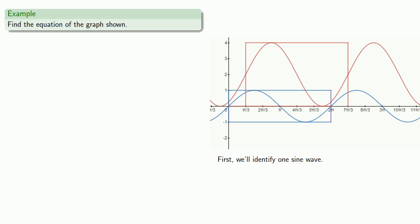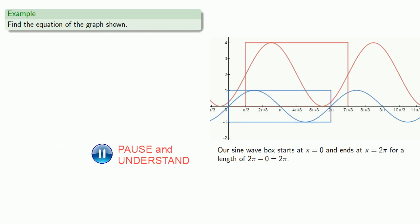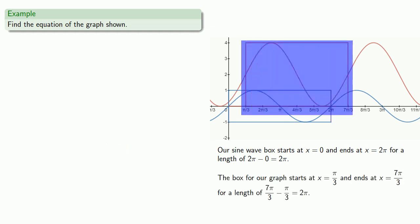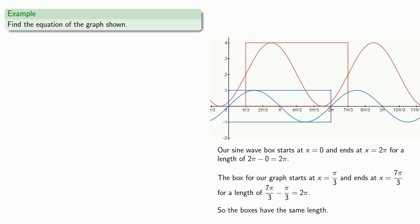Now let's compare our two boxes. Our sine wave box starts at x equals 0 and ends at x equals 2 pi, for a length of 2 pi. Meanwhile, the box for our graph starts at x equals pi thirds and ends at x equals 7 pi thirds, for a length of 7 pi thirds minus pi thirds, or 2 pi. So the boxes have the same length.